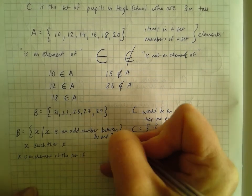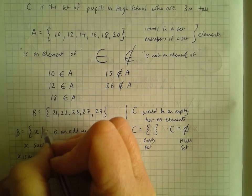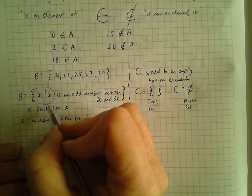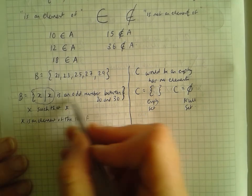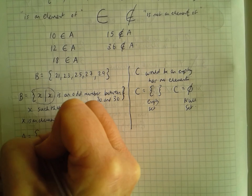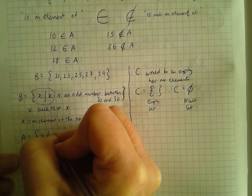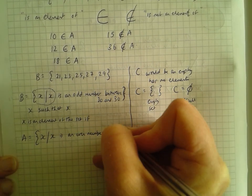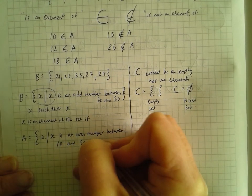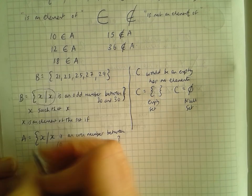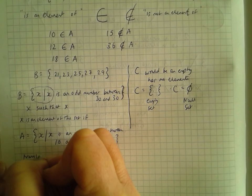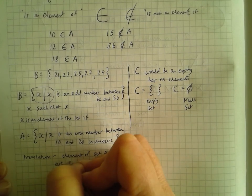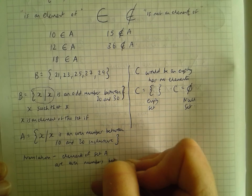X such that X — that's the bit that doesn't change every time we write a set. What it means is: X is an element of the set if it satisfies the condition. So set A would be curly brackets, X such that X is an even number between 10 and 20 inclusive. In plain English, the elements of set A are even numbers between 10 and 20.